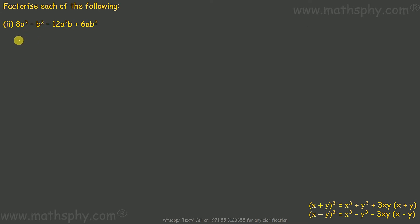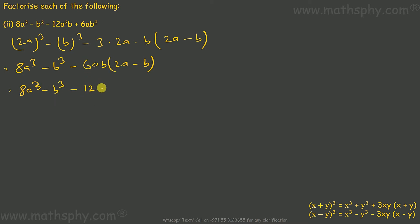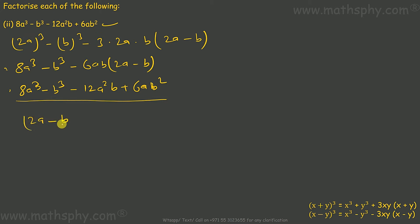For the next problem, I can write this as 2a cube minus b cube minus 3 into 2a into b times 2a minus b, which comes to 8a cube minus b cube minus 6ab times 2a minus b. So 8a cube minus b cube minus 12a squared b, and minus minus gives plus 6ab squared. You see this and this are the same, so this can be written as 2a minus b whole cube.